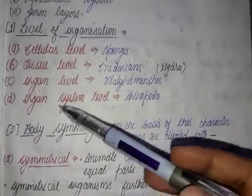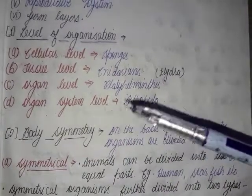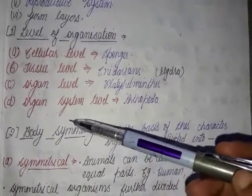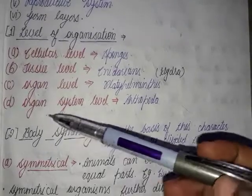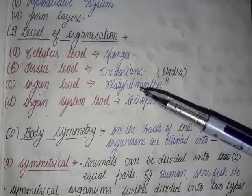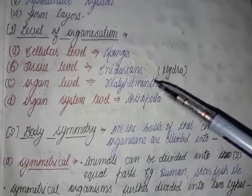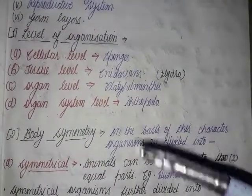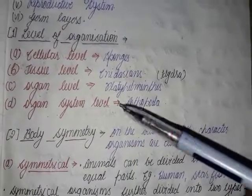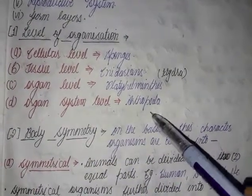Now coming to the fourth level — the organ system level. In organ system level, many organs together form systems in the body. This type of organization is known as the organ system level and is found in higher animals such as arthropods — whether they are human beings, fishes, birds, or reptiles.